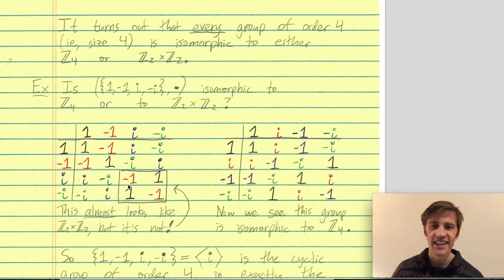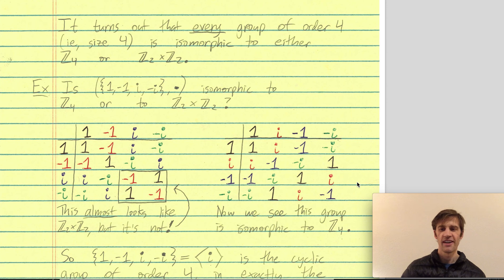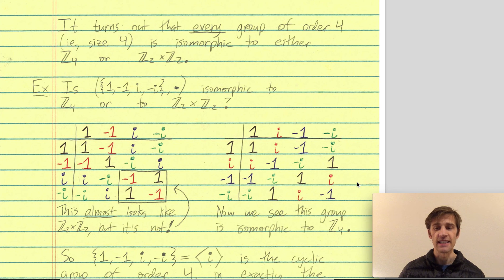Since I know the answer ahead of time, I'm going to reorder the elements as 1, i, -1, -i. When you draw the multiplication table and color-code the elements with this ordering, you get striped diagonal colors: black, red, blue, green, black, red, blue. At this point we can say: that's the same structure we saw in Z mod 4. So this group is indeed isomorphic to Z mod 4 — it is not isomorphic to Z2 cross Z2.